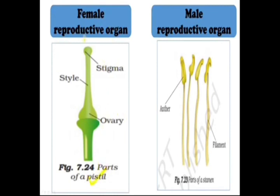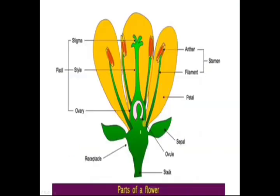The female reproductive organ is called pistil. The pistil consists of stigma, style, and ovary. The male reproductive organ consists of anther and filament — they are together called stamen.